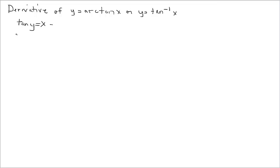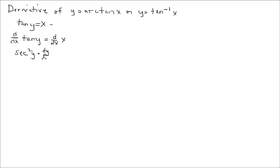Let's go ahead and bring in the derivative operator to both sides of the equation. Implicitly differentiating, the outside function is tangent, and we know that derivative is secant squared. Leave y alone, times the derivative of y with respect to x. The derivative of x with respect to x is 1.